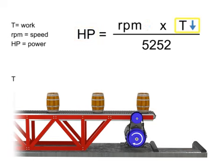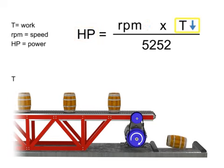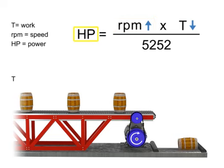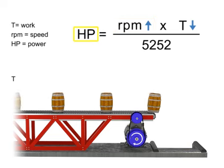If torque decreases, the speed of the conveyor increases and the horsepower generated by the motor remains constant.